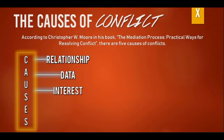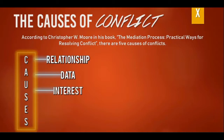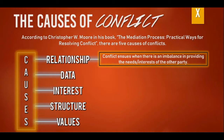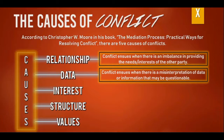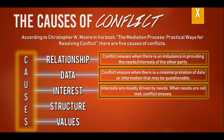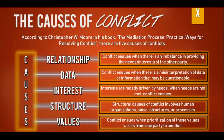Relationship conflict is induced when there is an imbalance in providing the needs or interests of the other party — this occurs mainly within relatives, classmates, or coworkers. Data conflict is induced when there is a misinterpretation of data or information, and is the most common type. Interest conflicts are mostly driven by needs; when needs are not met, conflict is induced. Structural causes involve human organizations, social structures, or processes — mainly involving society. And Values conflict is induced when prioritization of values varies from one party to another, often influenced by culture.